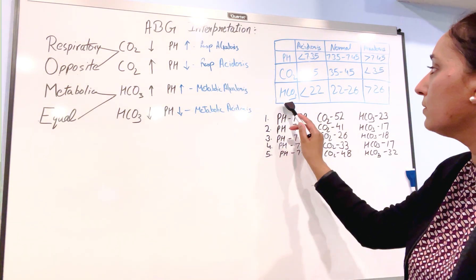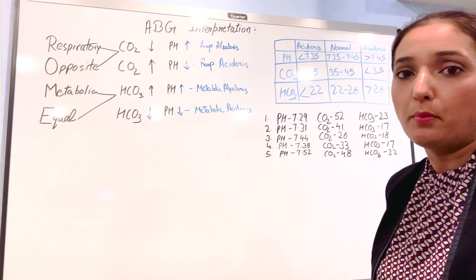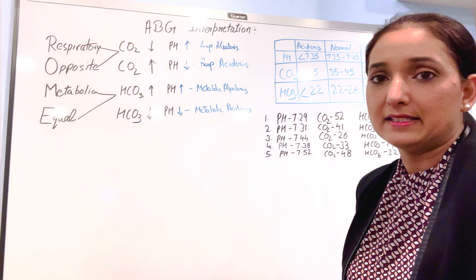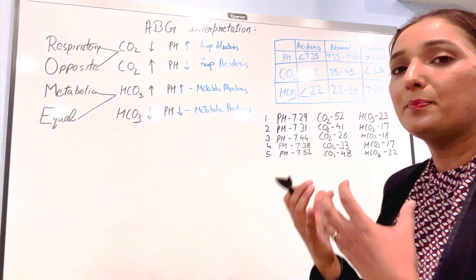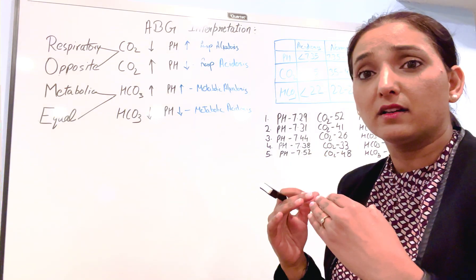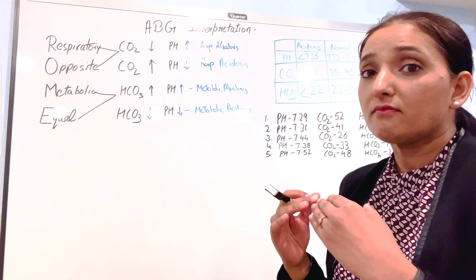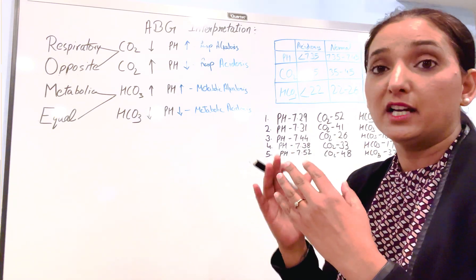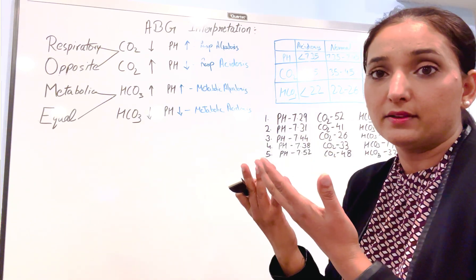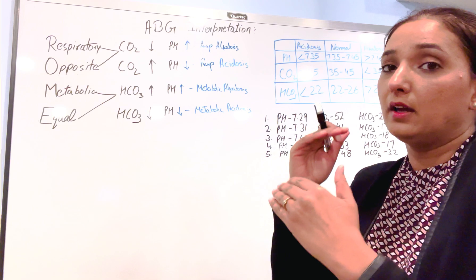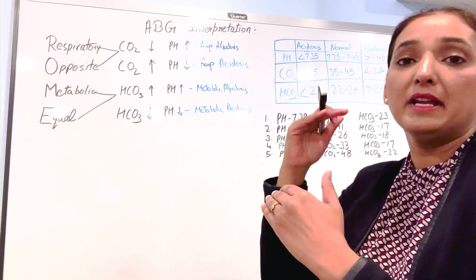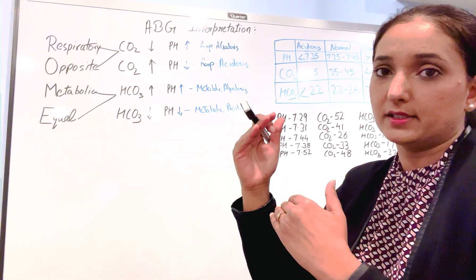Next you need to know the normal values of bicarb. The normal value of bicarb is 22 to 26. Bicarb itself is alkaline in nature. So higher the bicarb in your body, higher the pH value will be — they both go in the same direction. Higher the bicarb, that means body is going into alkalosis.